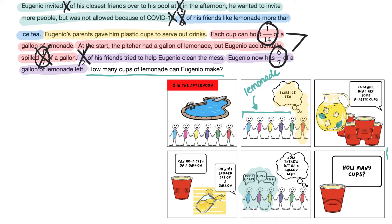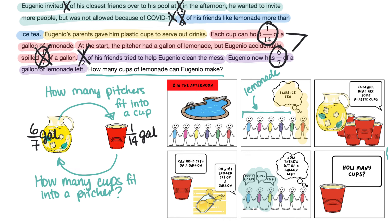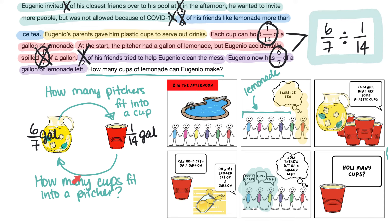So now we can see the two important numbers we've circled. Remember, division is finding how many times something fits into something else. So we want to ask: are we trying to see how many pitchers fit into a cup, or how many cups fit into a pitcher? Since we want to know how many cups of lemonade Eugenio is going to make, we're going to see how many cups fit into our pitcher of lemonade. This tells us our division sentence is going to be six-sevenths divided by one-fourteenth, since we want to figure out how many times one-fourteenth fits into six-sevenths.